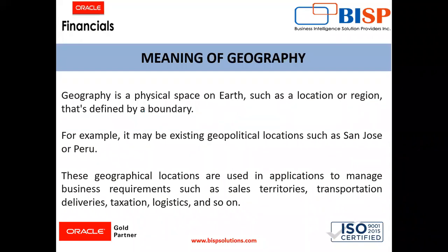The meaning of geography is the physical space on earth such as a location or region that's defined by a boundary. For example, it may be an existing geopolitical location such as St. Joe's or Peru, United States.